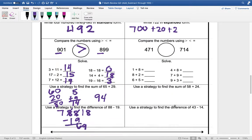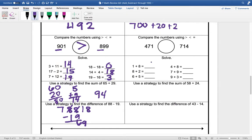722 in expanded form would be 700 plus 20 plus 2.